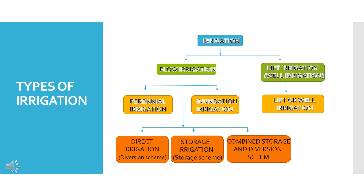Flow Irrigation, depending upon the source from which water is drawn, can be further subdivided into three types. First, Direct Irrigation. Second, Storage Irrigation. Third, Combined Storage and Diversion scheme.